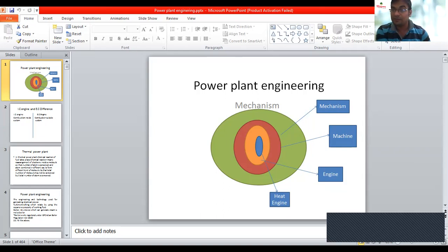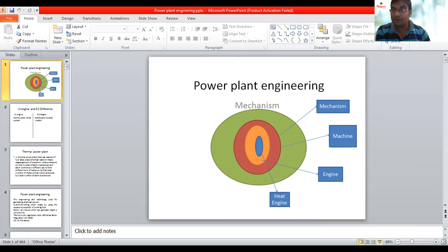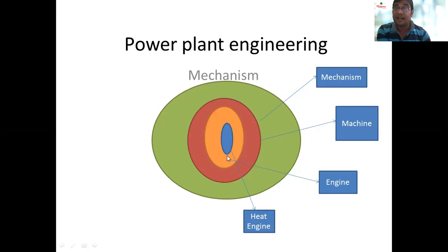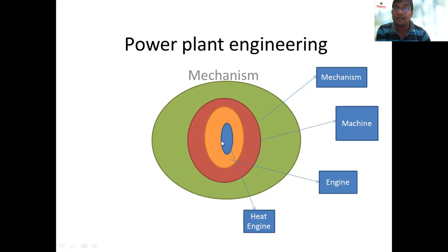Again, I am showing you the video and the PPT in a proper manner. This top circle which you can see is mechanism. The next circle is machine, then engine, then the inside circle is heat engine. Again I am telling you: if you go totally to the middle, the bottom innermost circle is heat engine, then engine, then machine, and the top circle is mechanism.